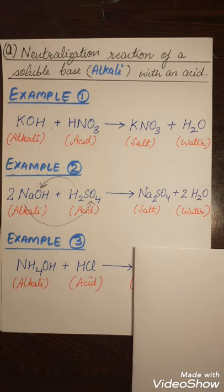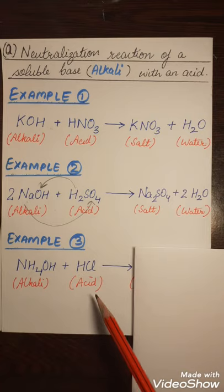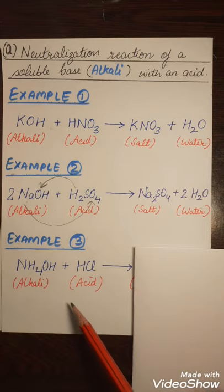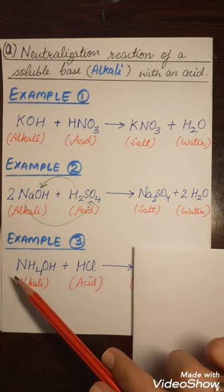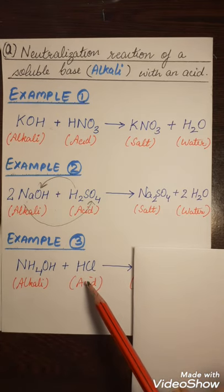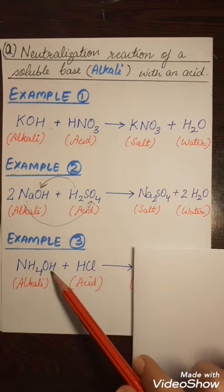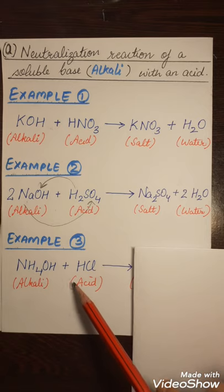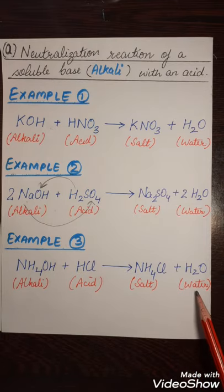Let us see the last example of soluble base neutralization. Here, ammonium hydroxide — an alkali, a soluble base — reacts with hydrogen chloride acid. Ammonium ion and chloride ion combine, so ammonium chloride will be formed. H⁺ of the acid reacts with the hydroxyl ion of the base, forming water. So we get the salt ammonium chloride and water.